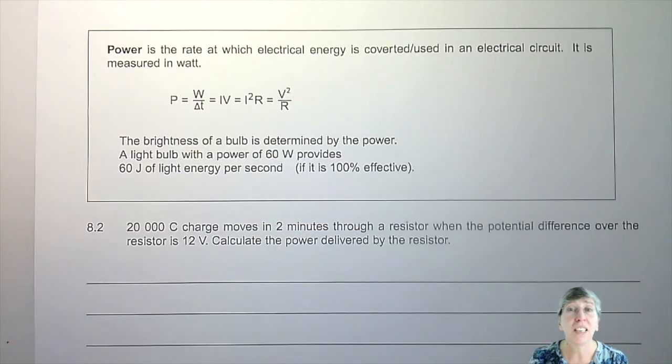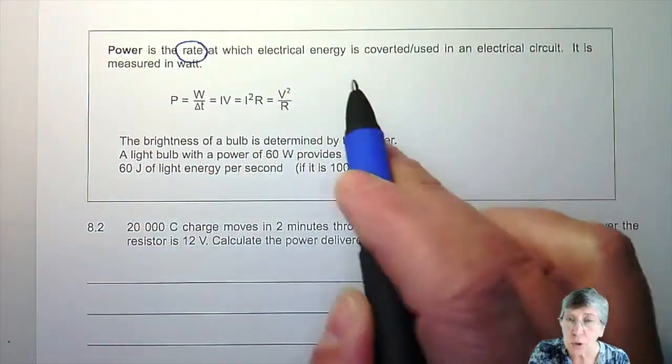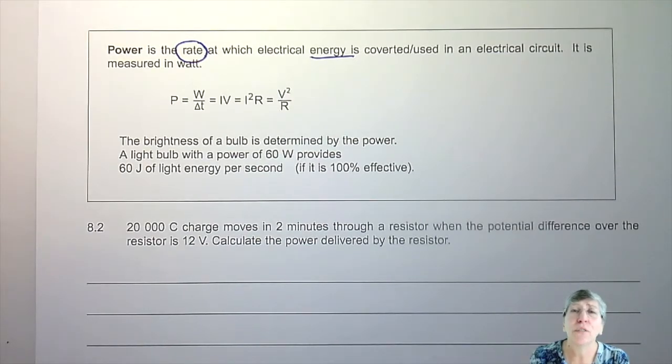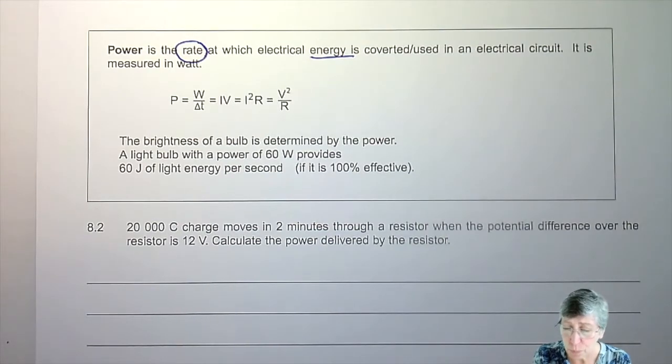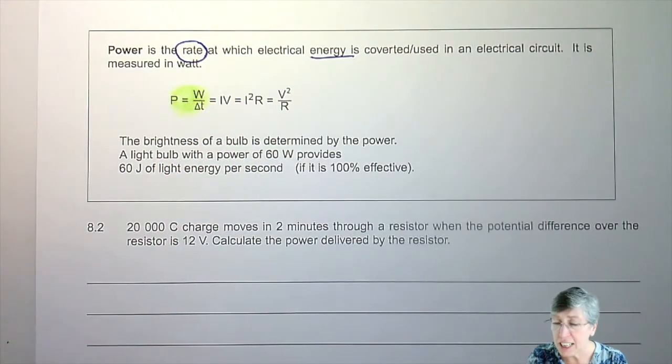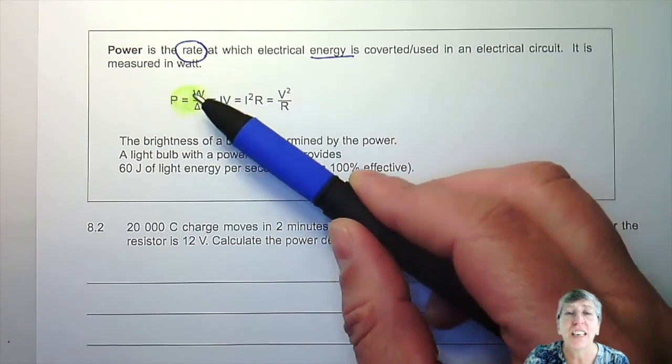Now we're looking at power and power is very important because you buy implements by looking at their power. You want to buy a microwave oven, you've got an 800 watt and 1200 watt to give you an idea of how much energy this appliance is going to give you per second, because power is all about the rate at which energy is converted or used. If you have a light bulb that is converting electrical energy to light energy, if you have a heater then that will be converting electrical energy to heat. So it's only converting. Remember energy is not destroyed, it can only be converted to another form.